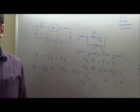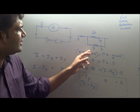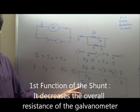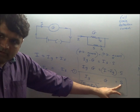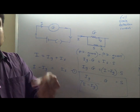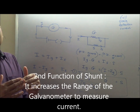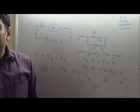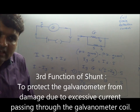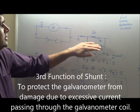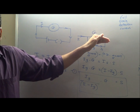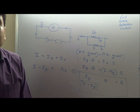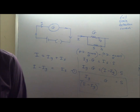There are three functions of the shunt resistance. First, it decreases the overall resistance of the galvanometer. Second, by substituting larger current values into the formula, I can extend the range of currents measurable with a particular galvanometer — increasing the measurement range. Third, if by chance an accidentally large current flows, the shunt provides an alternate path: without it, all the current would flow through the coil and damage it, but with the shunt present, part of the excessive current flows through the shunt, protecting the galvanometer coil.